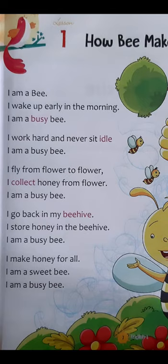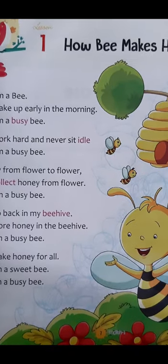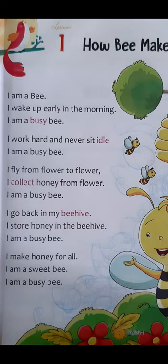Next line: I go back in my beehive. I go back in my beehive — मैं अपने घर वापस चली जाती हूँ. I store honey in the beehive — मैं अपने घर में शहद को इकठा करती हूँ. Beehive means मधुमक्खियों का घर, जिसको कहते हैं छत्ता. I am a busy bee. I make honey for all.